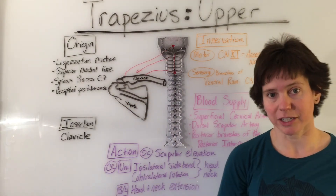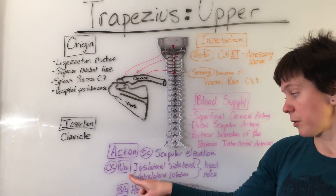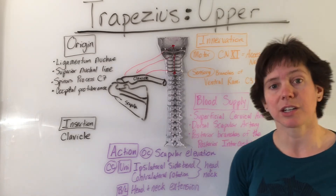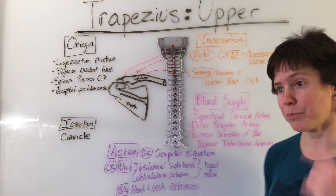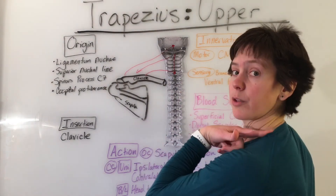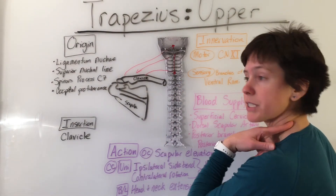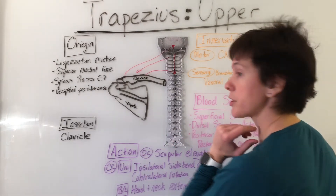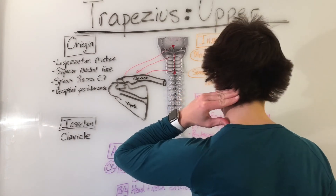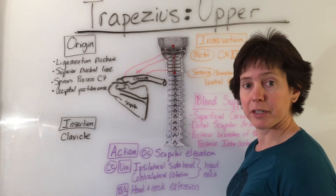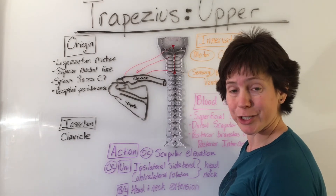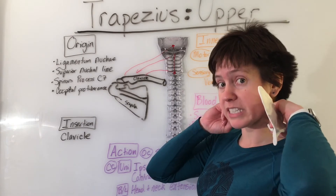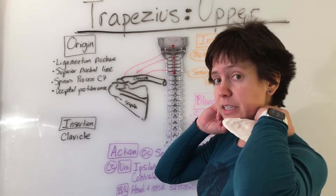In closed chain actions, unilaterally, the upper trapezius will perform ipsilateral side bending — same side bending — and contralateral rotation of the head and neck. Bilaterally, the closed chain action is head and neck extension, with both upper trapezius muscles working together to perform head and neck extension.